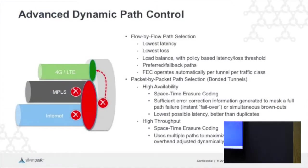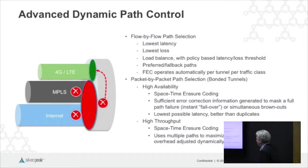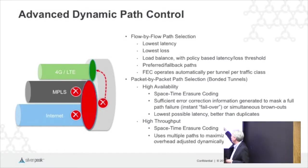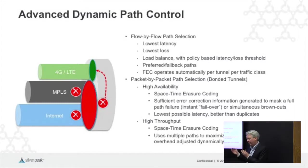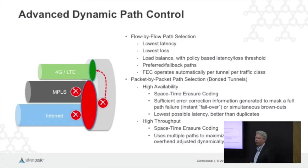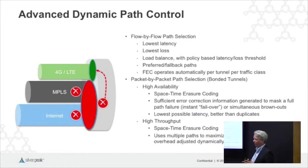One of the new functionalities we've introduced is the idea of bonded tunnels. With flow-by-flow, there are multiple choices in terms of how you choose a path. When a new flow arrives, you can say: I want to choose the lowest latency path, I want to choose the lowest loss path, or I want load balancing potentially with constraints — not more than 100 milliseconds or not more than 1% loss. We have the idea of preferred and fallback paths. There may be a path you prefer regardless of metrics, or a path you'd rather not take unless you have to — LTE, for example, because you're usually paying by the byte, would often be a fallback path. With flow-by-flow path selection, forward error correction operates automatically on a per-tunnel, per-traffic-class basis.